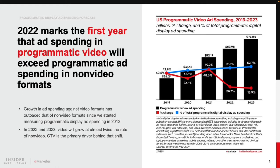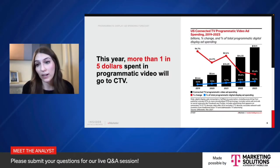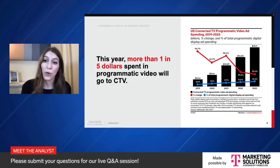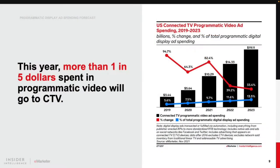Programmatic CTV is still pretty nascent relative to other programmatic channels and certainly relative to linear TV. When we started measuring programmatic CTV in 2017, it accounted for over 6.5% of programmatic video ad spending. This year, one in every $5 spent in programmatic video will go to CTV — quite a change in only five years' time. Recent growth was propelled by a surge in CTV ad inventory as the pandemic boosted time spent with streaming video, as well as increased CTV penetration in U.S. households. Advertisers will continue funneling investment into CTV and programmatic CTV will sustain double-digit growth in ad spending next year as well.